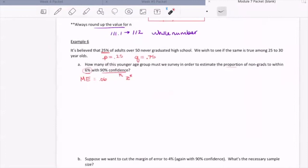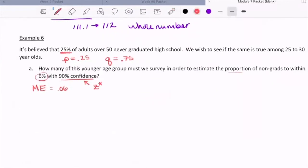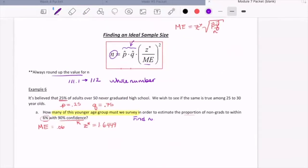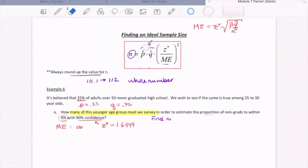So we're going to copy that down. That means Z score is equal to 1.6449. And so the question here is, how many of this younger age group must we survey? So that means we want to find n. Let's check. Do we have everything we need to compute n? Well, we have our p and our q, we have our Z star, and we have our margin of error. So we can just plug in all the information we have to compute n.